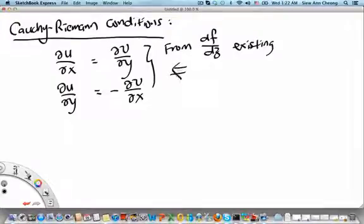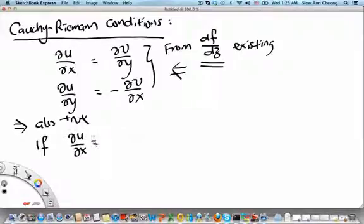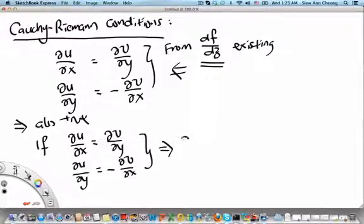So this set of conditions we get from df/dz existing. That means the implication is this direction: the existence of df/dz implies that these sets of partial derivatives are related in this particular way. But it turns out that the opposite implication is also true. We will not show it in this video segment; we will just quote it because it's already proven by mathematicians that if ∂u/∂x equals ∂v/∂y and if ∂u/∂y equals minus ∂v/∂x, then these together imply that df/dz exists. So next we will look at the same two examples again, but this time using the Cauchy-Riemann conditions to decide whether they are differentiable or not.